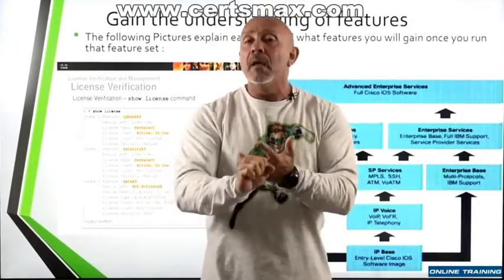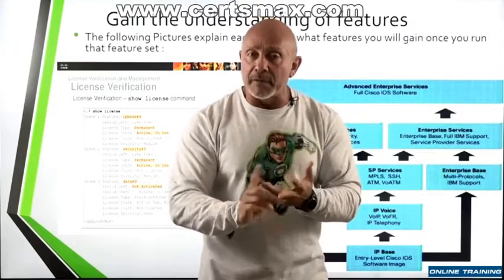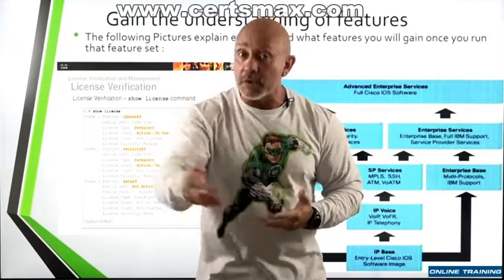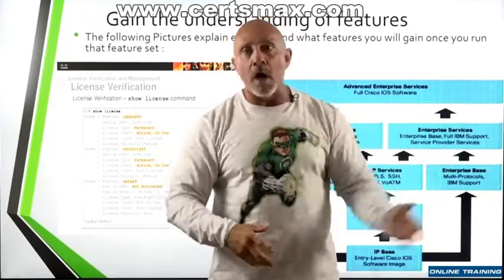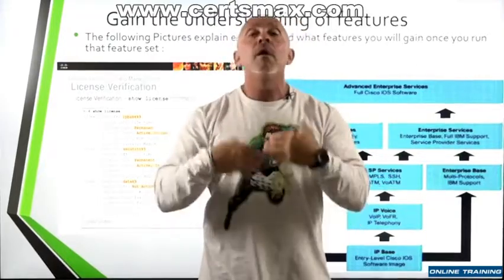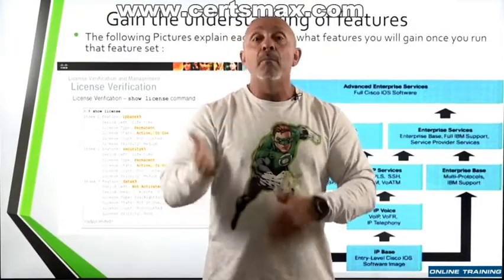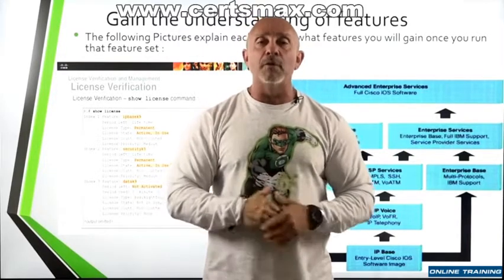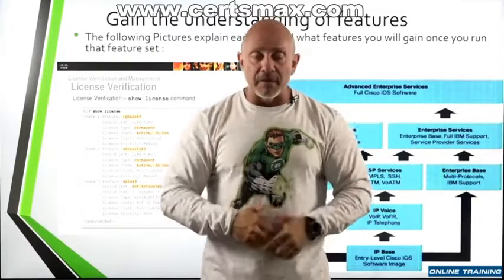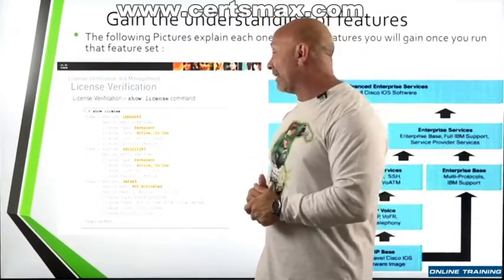When you're doing GNS3, Virl, or whatever simulator — Packet Tracer unfortunately gives you whatever they provide — but if you have the latest and greatest versions, like IOS XR, you'll get new feature sets. You have to pay for it. You download from Cisco when you purchase the IOS, then activate those feature sets and verify them with 'show license'.